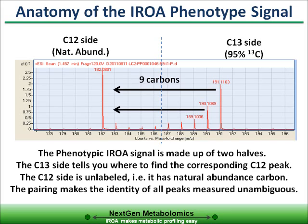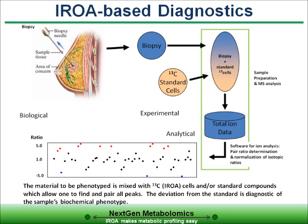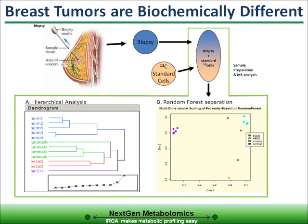There is a second way to perform an AROA experiment that is useful for biopsies or other situations where it is not possible to label both the experimental and control samples. In this case, the 95% signal with its M-1 may be used to identify its natural abundance equivalent by using the height of the M-1 to absolutely identify it. Here, a cell grown to express a defined collection of 95% labeled biochemicals may be mixed with a biopsy or other non-labeled sample, and the software will still be able to accurately quantitate and identify the biochemical equivalents for every molecule in the control cell. If a library of diseased tissues or tumor types has been previously defined, then the tissue under analysis should fall into a previously known class.